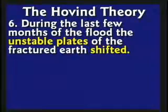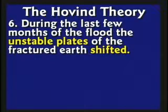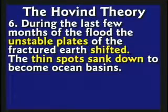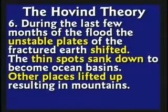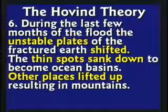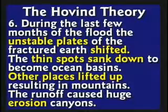Here's my theory. During the last few months of the flood, the unstable plates of the earth, which had been fractured, would shift. If the earth's crust was cracked up like an eggshell and these pieces are floating around — if the thin spots sank down, the water would rush down, causing the Grand Canyon to form in a few hours or weeks. The other part that lifted up would become the mountain range. The runoff would cause huge canyons in a hurry.